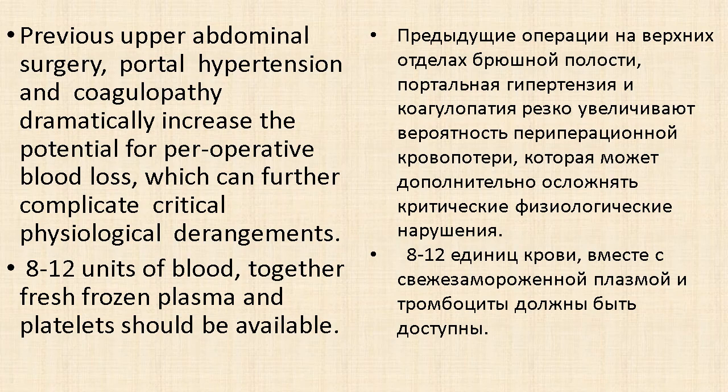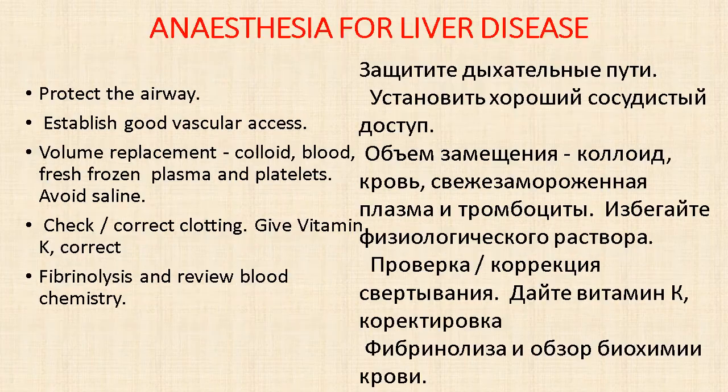Previous upper abdominal surgery, portal hypertension and coagulopathy dramatically increase the potential for perioperative blood loss, which can further complicate critical physiological derangements. Eight to twelve units of blood together with fresh frozen plasma and platelets should be available.